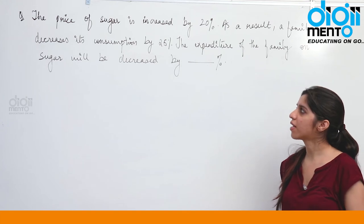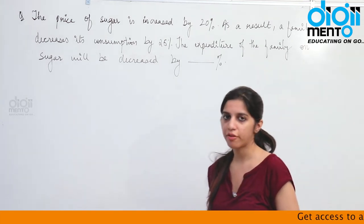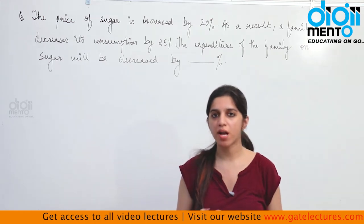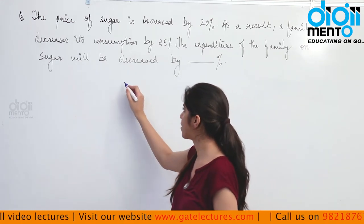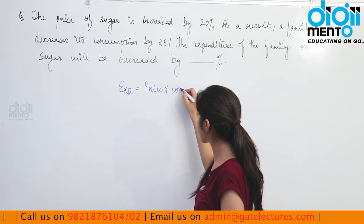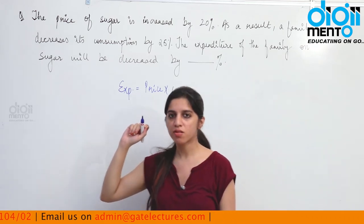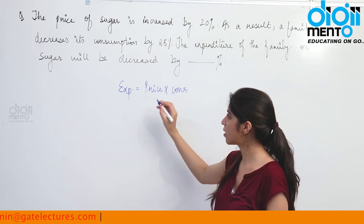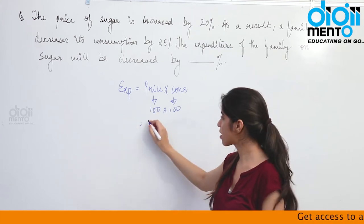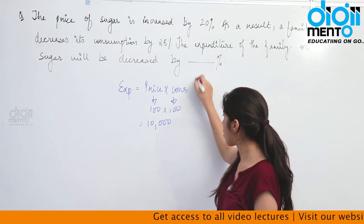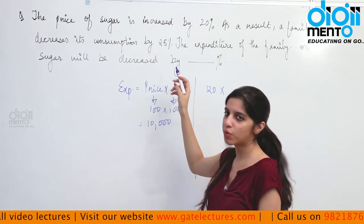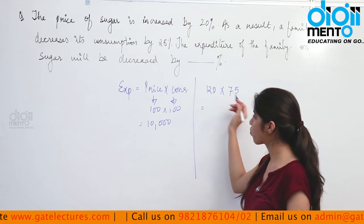Now look at this question. The price of sugar increased by 20 percent and as a result a family decreased its consumption by 25 percent. They are asking by how much percent the expenditure of the family on sugar decreased. Expenditure equals price multiplied by consumption. Since everything is in percentages, assume initial price was 100 and initial consumption was 100, giving initial expenditure of 10,000. Price increased by 20 percent, so price became 120. Consumption decreased by 25 percent, so consumption became 75.